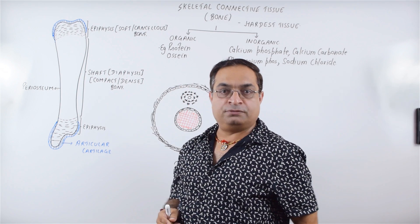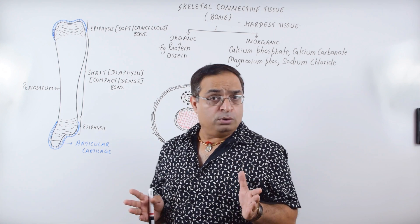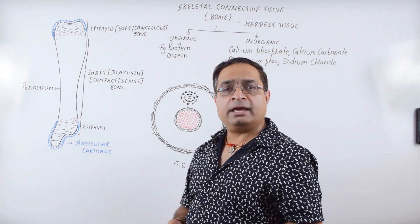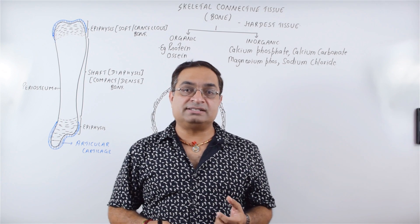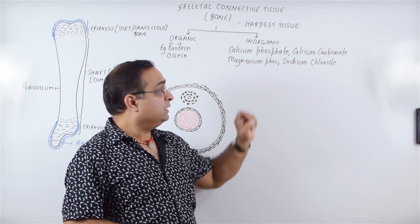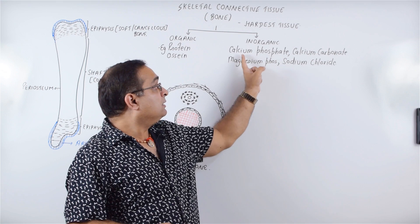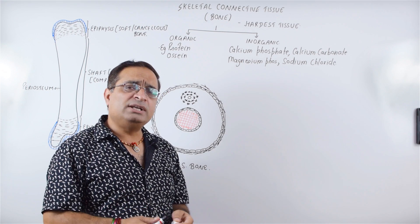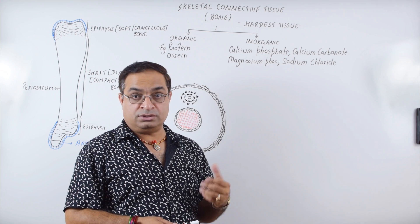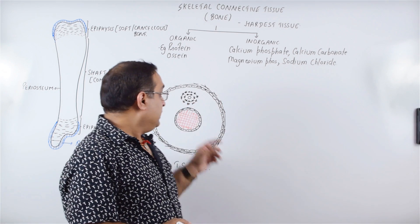This outermost layer is the periosteum. It is made up of collagen fibers, which are also called Sharpey's fibers, and osteoblasts, which are the bone-forming cells. Bone is the hardest tissue in the body. Bone consists of organic components as well as inorganic components. The major protein in bone is ossein. Inorganic components include calcium phosphate, calcium carbonate, magnesium phosphate, and sodium chloride — the maximum being calcium phosphate. When a bone is burned, the organic components are destroyed. When a bone is kept in dilute HCl, its inorganic components dissolve and it is called a decalcified bone.